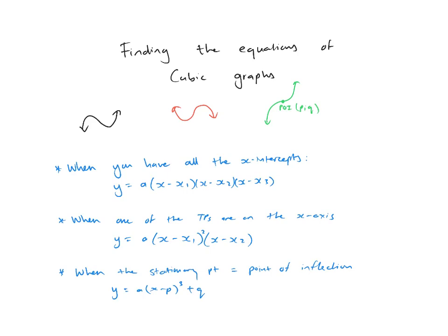When you think of cubic graphs, I want you to think of those three graphs. The black and the red cubic graphs are like your default cubic graphs — they're beautiful. They've got two stationary points and a nice point of inflection halfway between the two stationary points. The black graph has a positive leading coefficient A, and the red graph is when that leading coefficient — the coefficient of x³ — is negative.